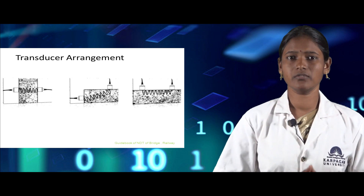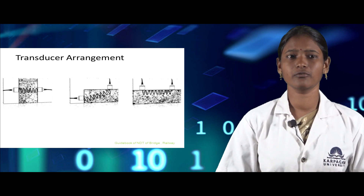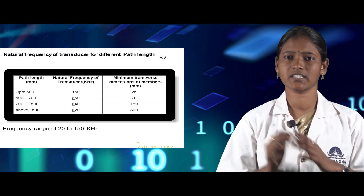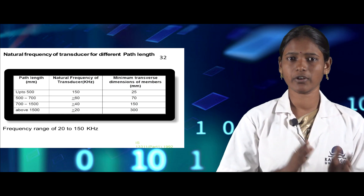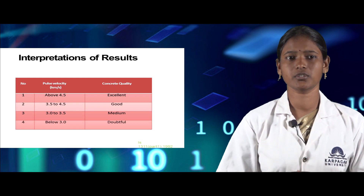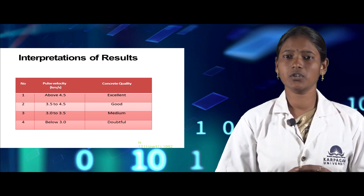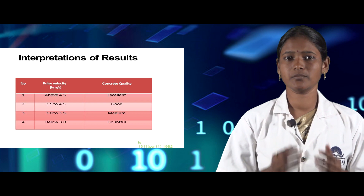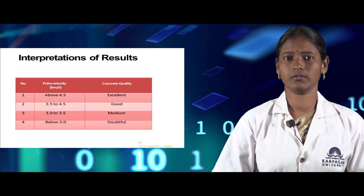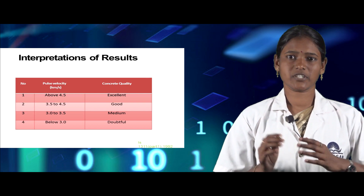The interpretation of test results for the ultrasonic pulse velocity test depends upon the pulse velocity, which determines concrete quality. If the pulse velocity is above 4.5 km/s, it is excellent. If it is 3.5 to 4.5, the quality is good. If it is 3 to 3.5, the quality is medium. If it is below 3, it is doubtful.